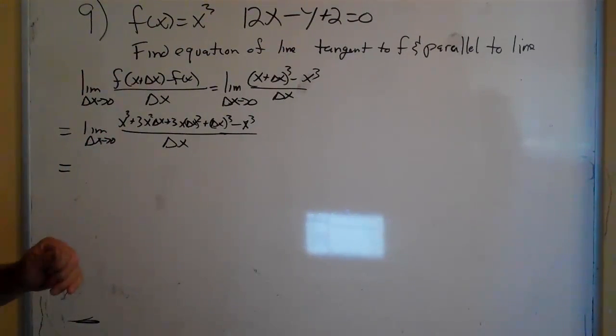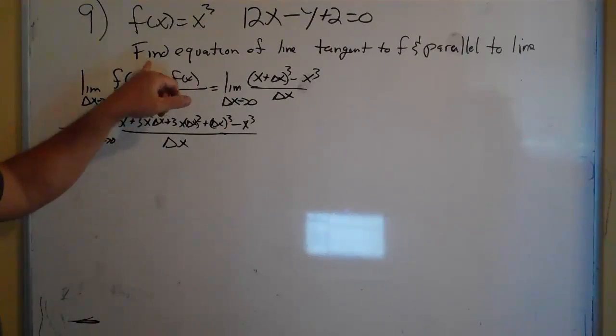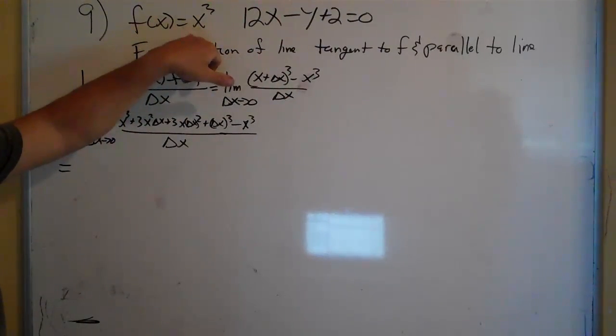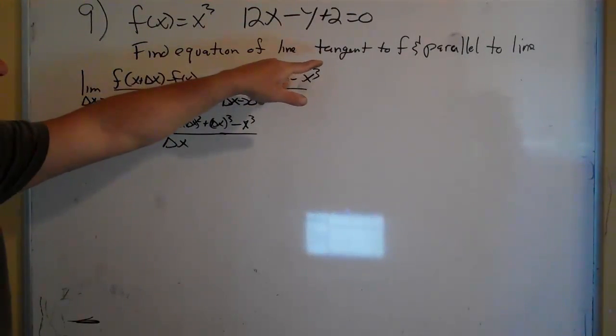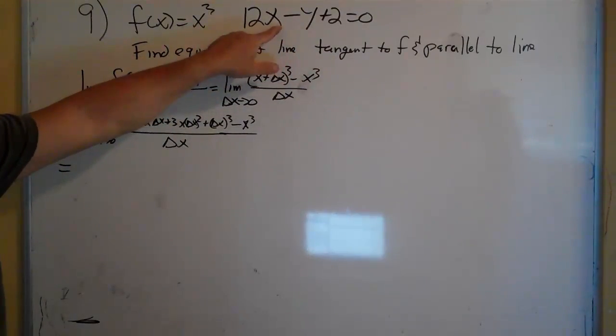So we have f of x equals x cubed. We want to find the equation of the line that's tangent to this curve and parallel to this line right here.